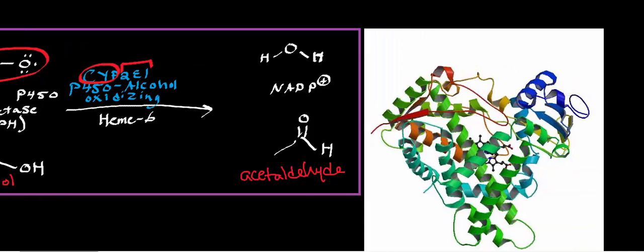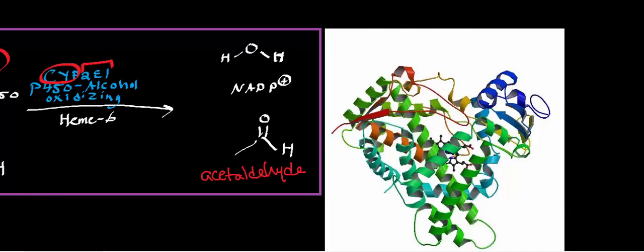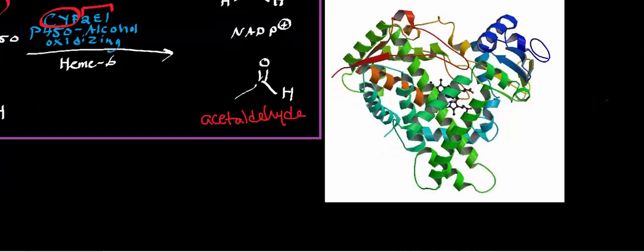Just for some information right here, this is the ribbon diagram for cytochrome P450 2E1. All these P450s, unless it's a mitochondrial one, this one is not, they are in the smooth endoplasmic reticulum. This one is in the smooth ER, and it's a membrane-bound enzyme. Here you can see part of the heme cofactor or coenzyme that's here in the active site.